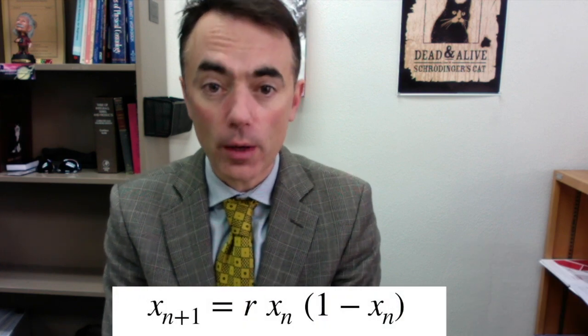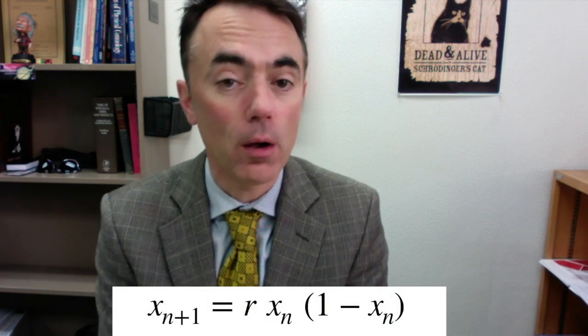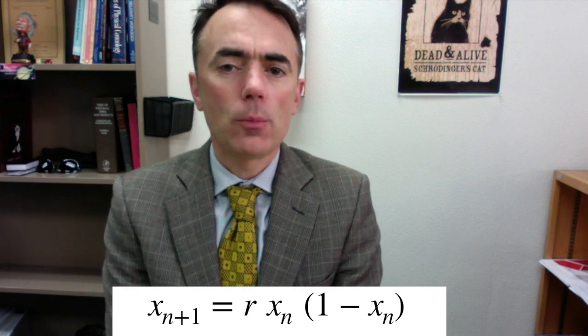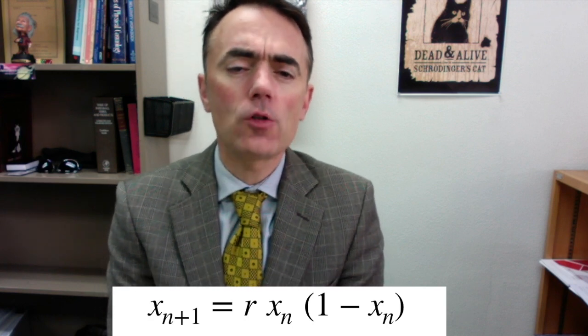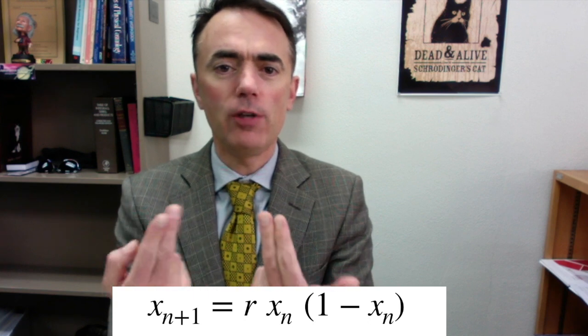What usually happens is that there is competition for the resources. So the more individuals, the more competition will be. So we can model this by adding a term to our equation: x sub n plus 1 equals r times x sub n times 1 minus x sub n, where the x sub n squared terms account for competition between individuals.